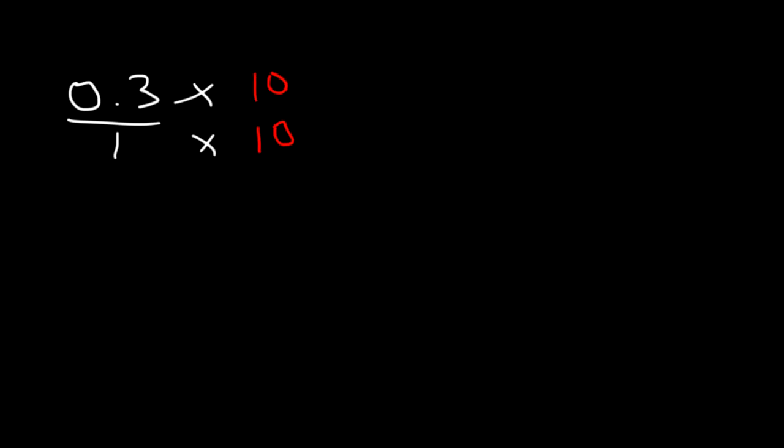Now, 0.3 times 10 is basically equal to 3. You just got to move the decimal point in one unit to the right. 1 times 10 is 10. So, 0.3 is the same as 3 over 10. That's how you can convert it into a fraction.